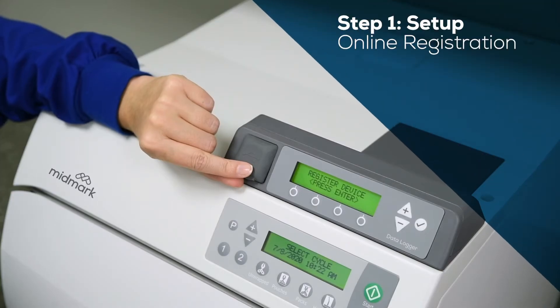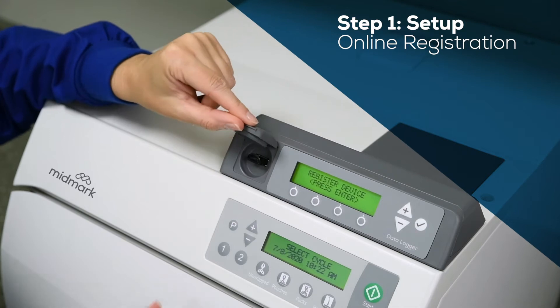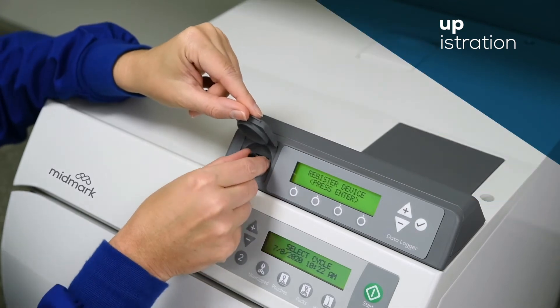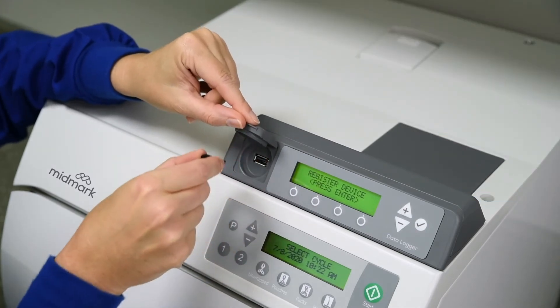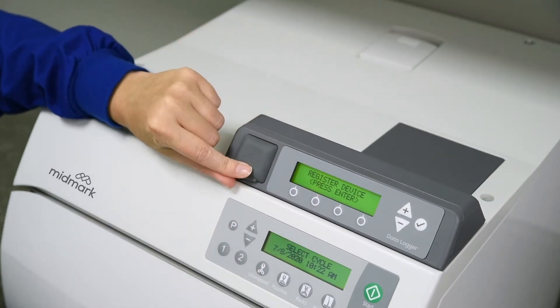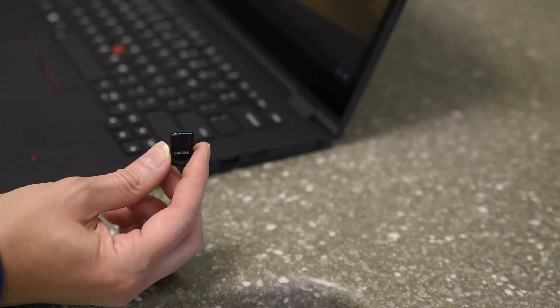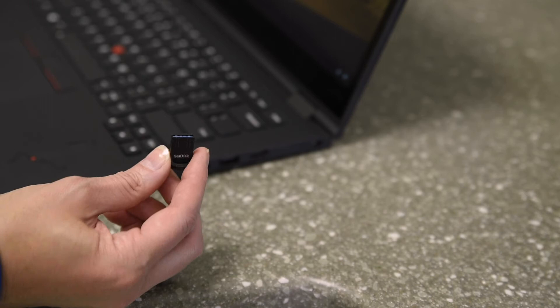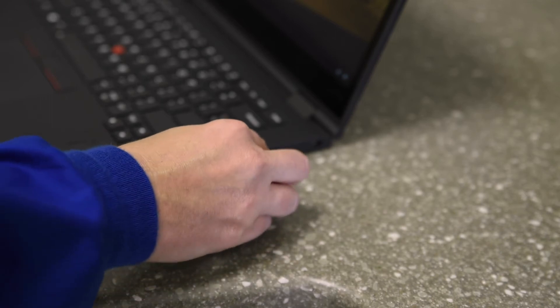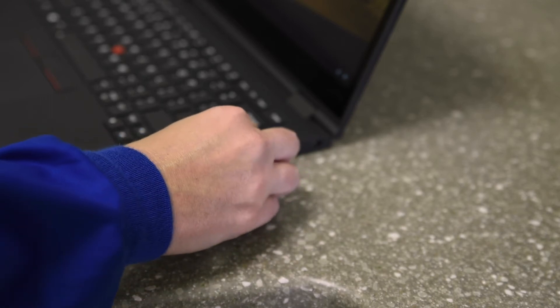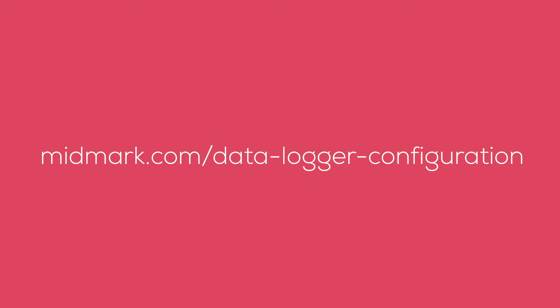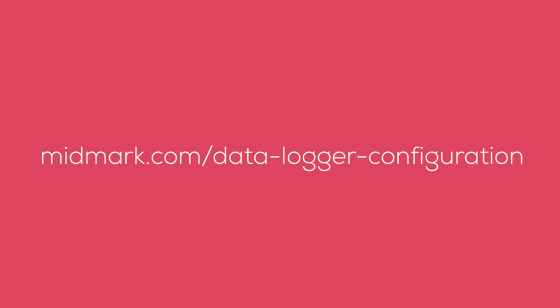To begin the online registration process, first remove the USB device from the sterilizer data logger. Transfer the USB device to an internet-enabled computer and navigate to the URL shown on screen.